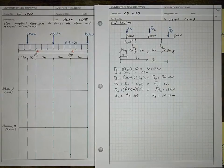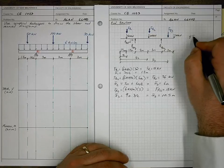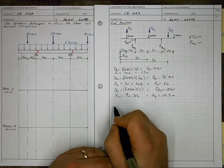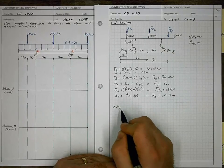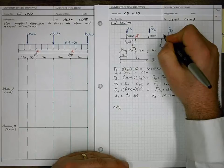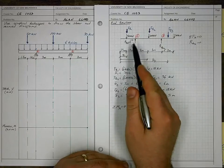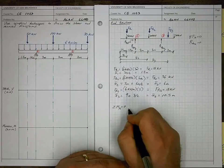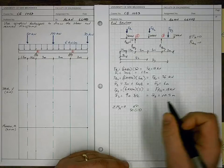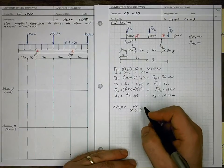Now we're ready to solve for our two reactions. The sum of forces in X equals zero, therefore RAX equals zero. We'll take the sum of moments about location A equal to zero. We have 50 times 1.5 — the 50 kN point load times its moment arm — acting counterclockwise, which makes it a positive moment. Plus 18 times 1.5, that's FR1 times its moment arm, acting positive.